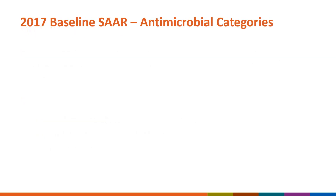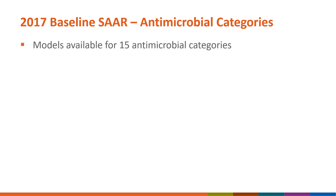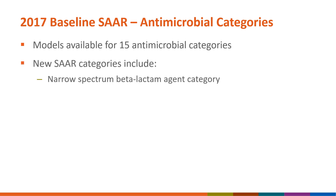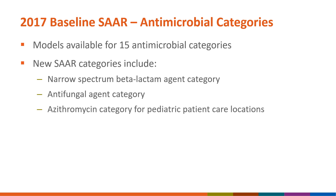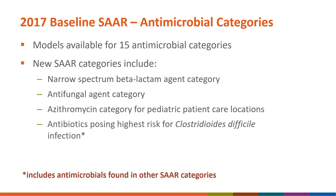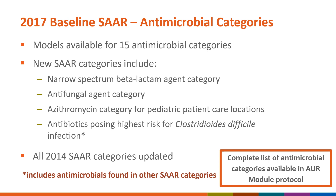The calculations for SARs using the 2017 baseline cover 15 antimicrobial categories. These categories now include narrow-spectrum beta-lactam agents, antifungals, grouping categories specific to pediatric populations, and antibiotics posing the highest risk for Clostridioides difficile infections. In addition, we updated all SAR antibiotic categories, adding or removing drugs from the categories as needed. A complete list of the antimicrobial categories is available in the AUR module protocol.